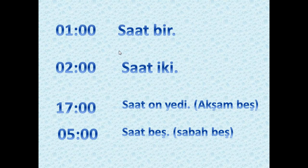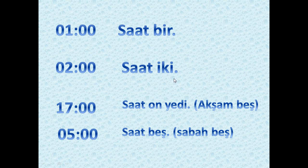For the o'clock version — the sharp time — we say 'saat bir'. We say 'saat' and then we tell the number: 'saat bir', 'saat iki', 'saat üç', 'saat dört', 'saat beş'. It means one o'clock, two o'clock, three o'clock and it goes on. Now here when it is PM...